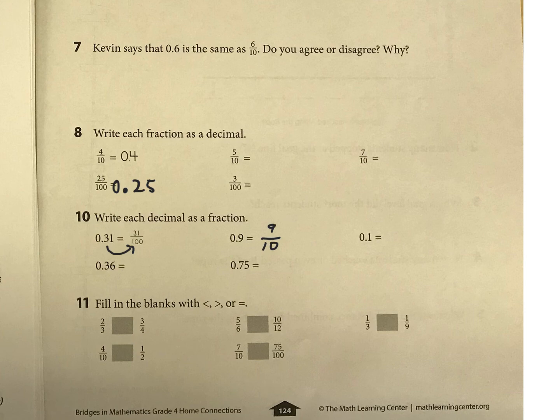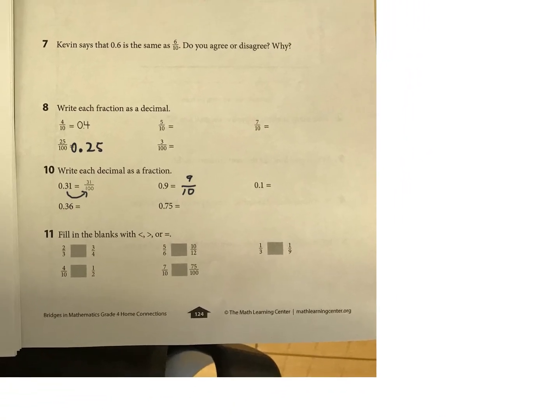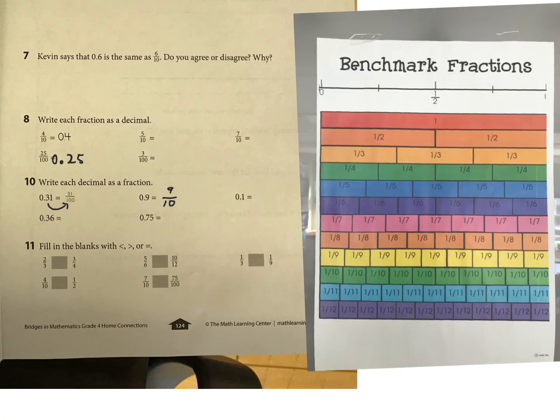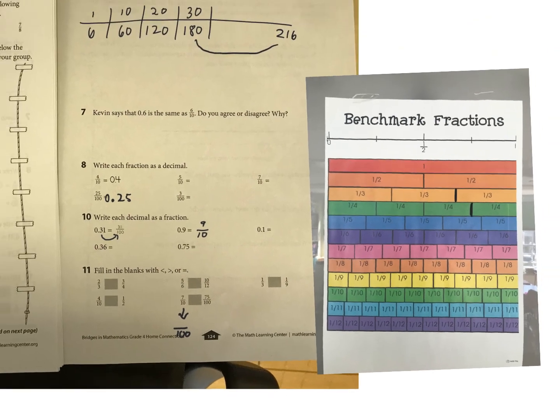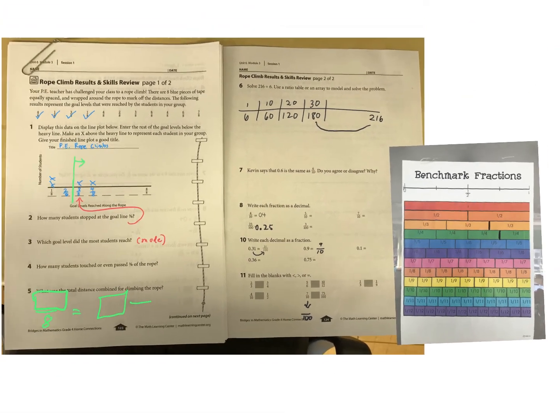And then for these other ones, let's pop in a fraction chart to check these. Okay, so we have what first 2 thirds is here and 3 fourths is there. So how would those compare? And then for the rest of those, I think you can just look at these and figure it out. This last one, what you'll need to do is convert 7 tenths to hundredths and compare those that way. But I think we learned a lot about those before. So I think we're okay.